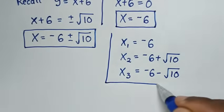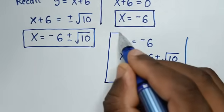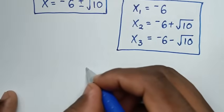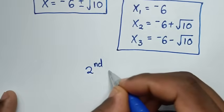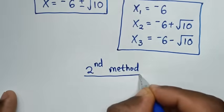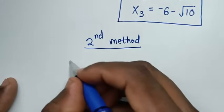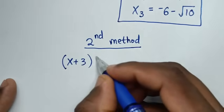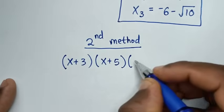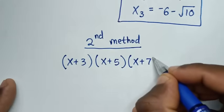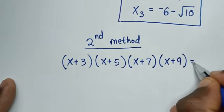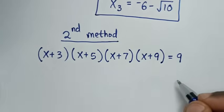These are all the values of x in this problem. Now to solve using another method — this is the second method. The problem is again (x+3)(x+5)(x+7)(x+9) = 9.